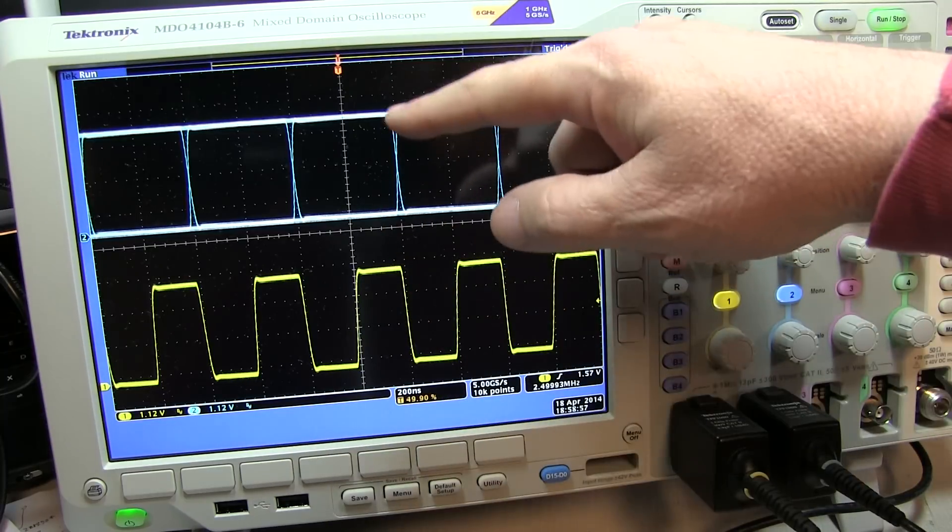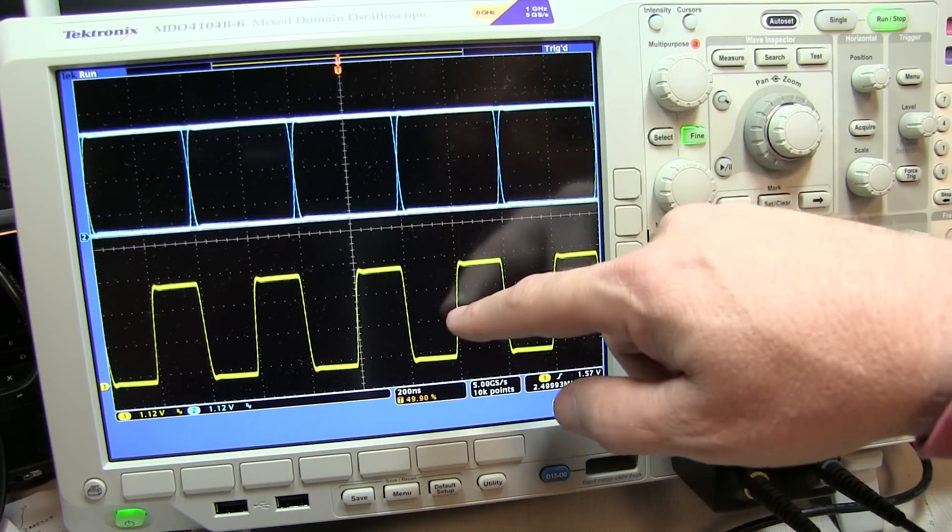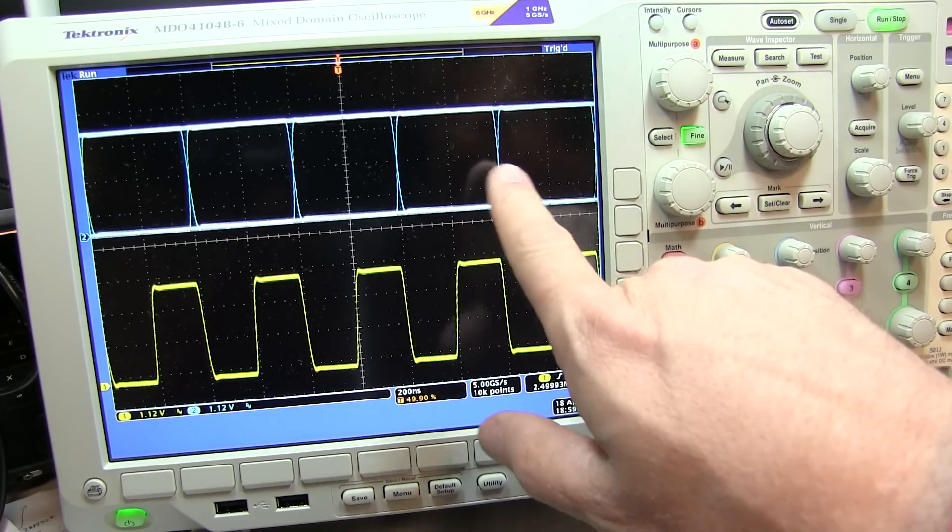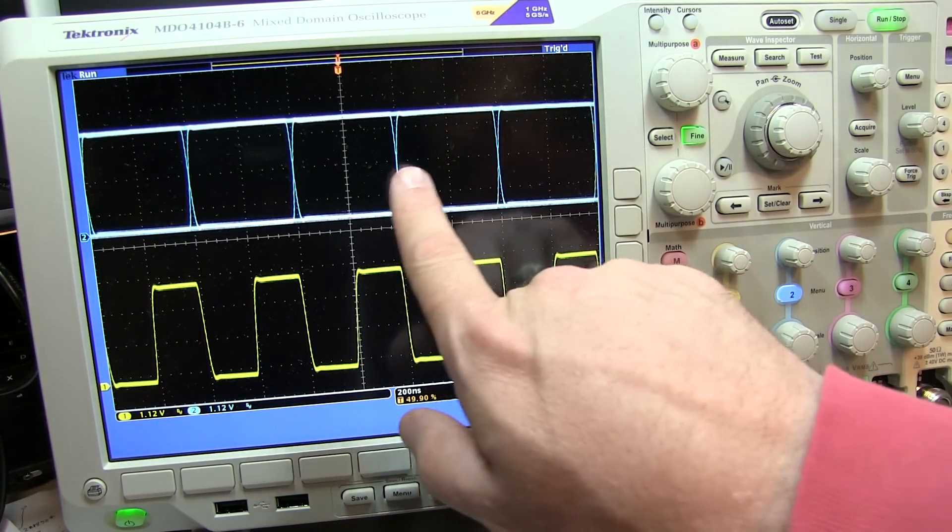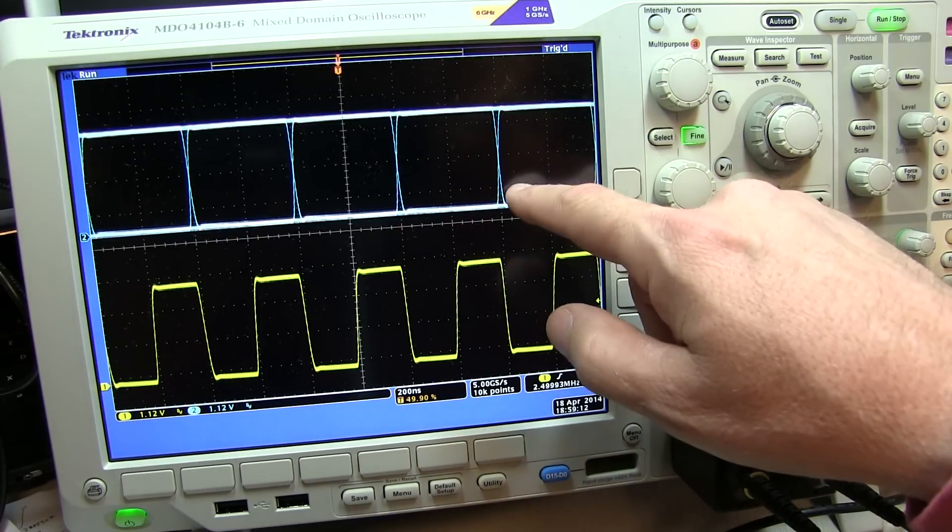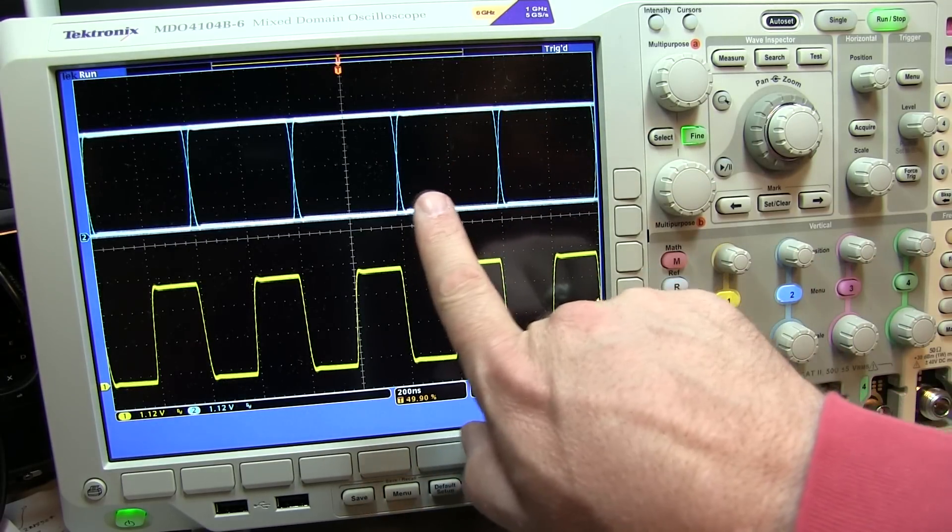If there was a lot of noise on the 0 or 1 level, that might affect our ability to clock that signal reliably into the next circuit. Or if there was a lot of jitter in the edge positions, or a really slow rise or fall time in these edge positions, that might affect our ability to position this clock in the right spot.